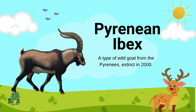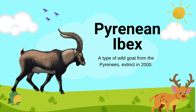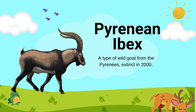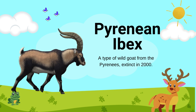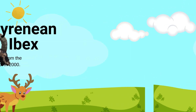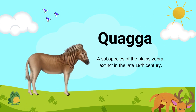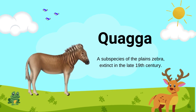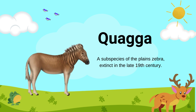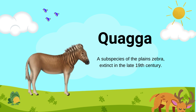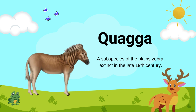Pyrenean ibex: a type of wild goat from the Pyrenees, extinct in 2000. Quagga: a species of the plains zebra, extinct in the late 19th century.